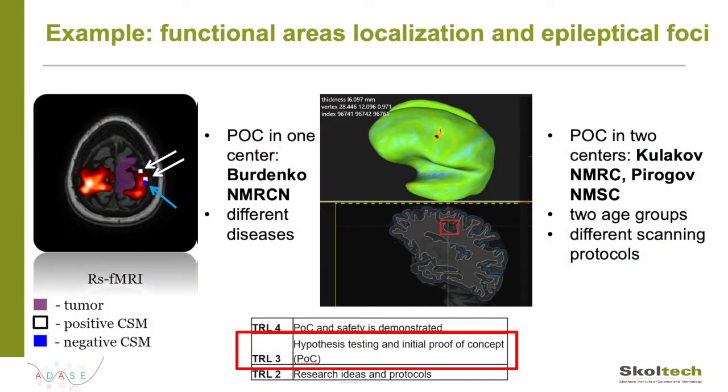Let me introduce our two examples. One is the project for brain functional areas localization for pre-surgical planning with the Burdenko Center for Neurosurgery. This is an important step before the operation and helps the neurosurgeon to preserve functional brain areas during the operation — these could be, for example, brain areas responsible for movement, speech or vision. We should look at this project from the points of view of TRL and trustworthiness. We have a POC working at the Burdenko Center for Neurosurgery where we can plan operations for different brain diseases.